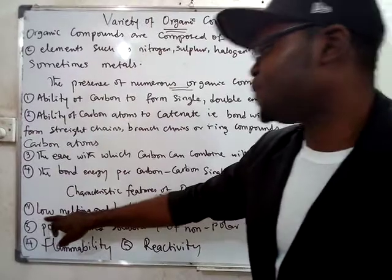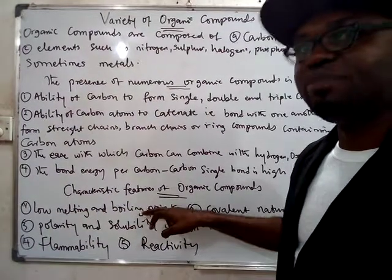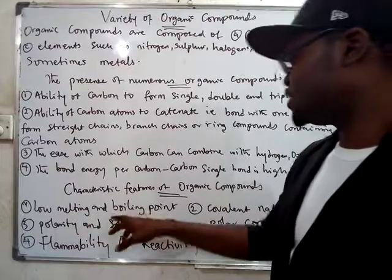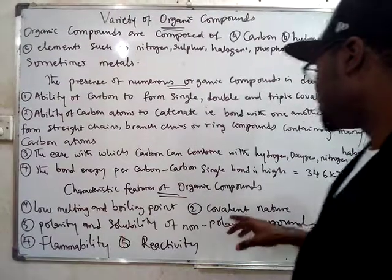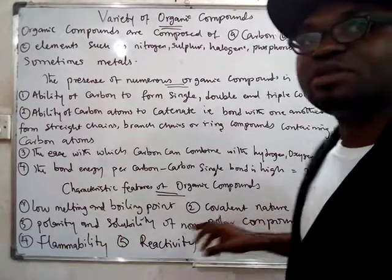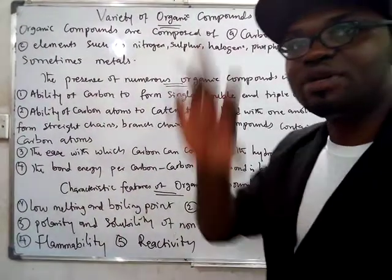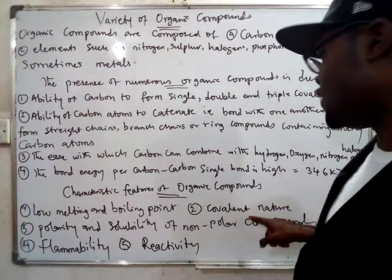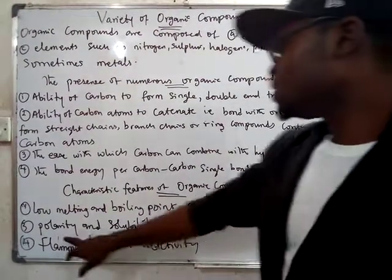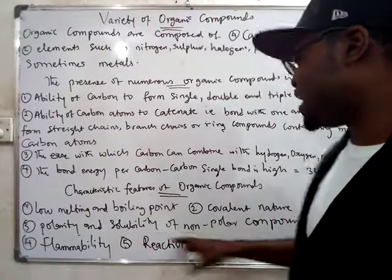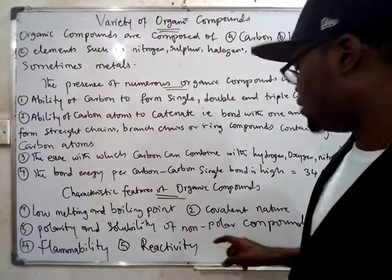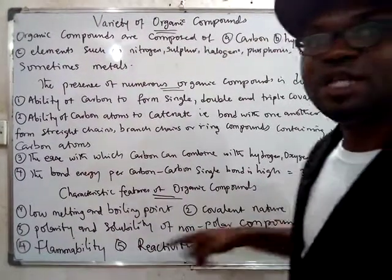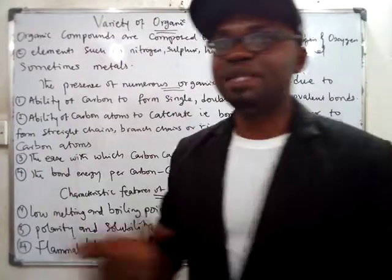Organic compounds have low melting and boiling points because of the weak intermolecular forces between them. They are covalent in nature — carbon has four outer electrons, so it forms covalent bonds.